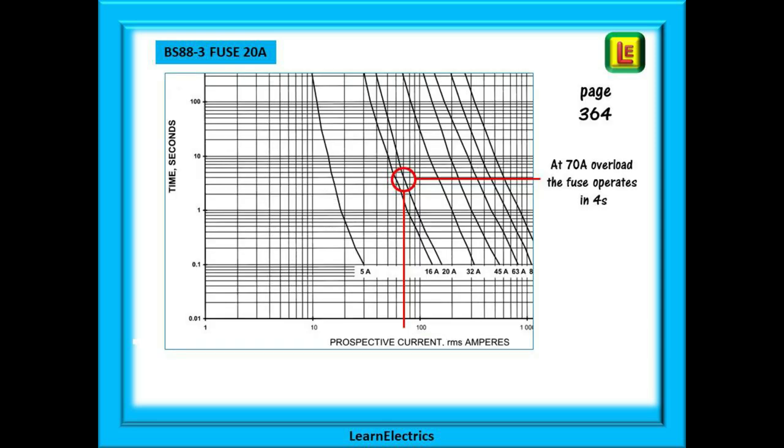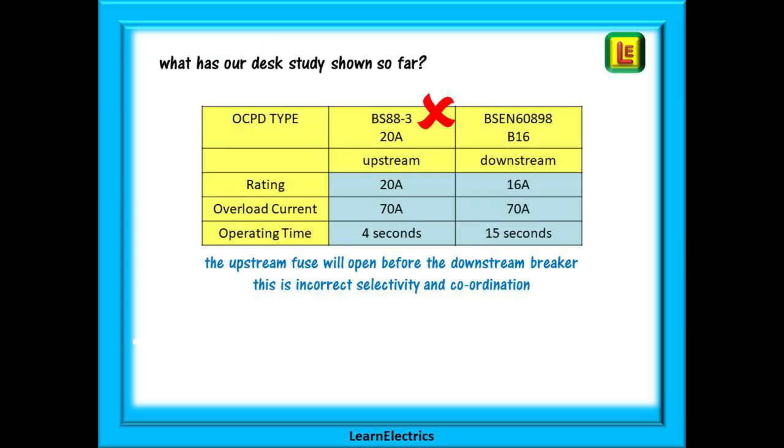First find the chart on page 364. Now look for 70 amps along the bottom and follow this up the vertical line until it meets the curve for a 20 amp fuse. Then check the seconds on the left hand side and we have a response time of 4 seconds. So a 20 amp BS88-3 fuse with the same 70 amps of overload current will operate in 4 seconds. If we put these into a table for comparison we can see that the upstream device the fuse will operate long before the downstream MCB. This is clearly incorrect selectivity and bad coordination.